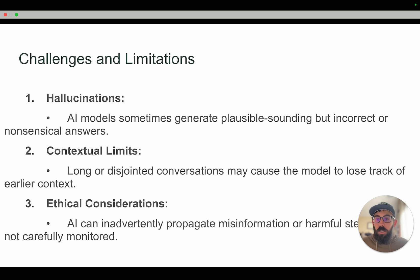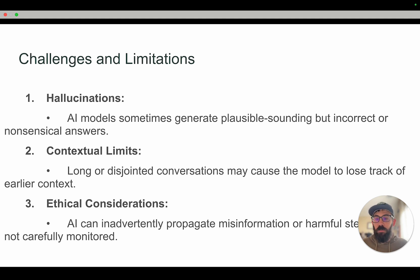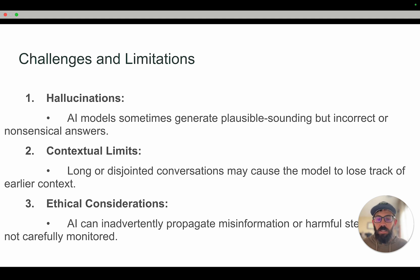Finally, a couple of challenges and limitations of current AI models. One is hallucinations — that's when AI models generate plausible-sounding information that is actually incorrect or nonsensical. There are also contextual limits: if you give it a lot of information or have a longer conversation, it can start to get disjointed and lose track of earlier context. And then there are ethical considerations — AI can inadvertently propagate misinformation or harmful stereotypes.